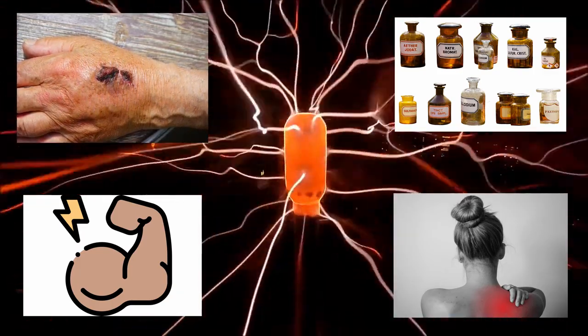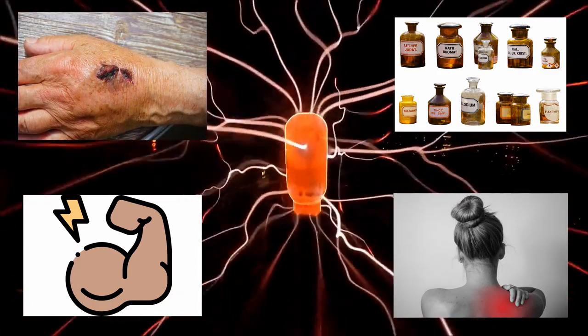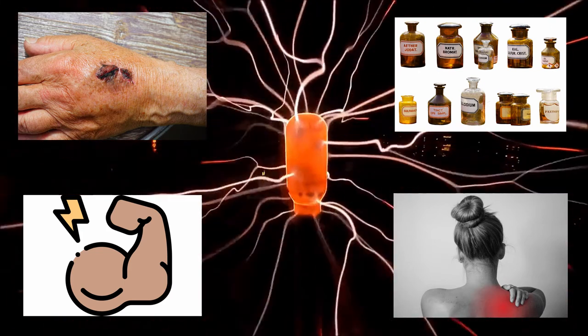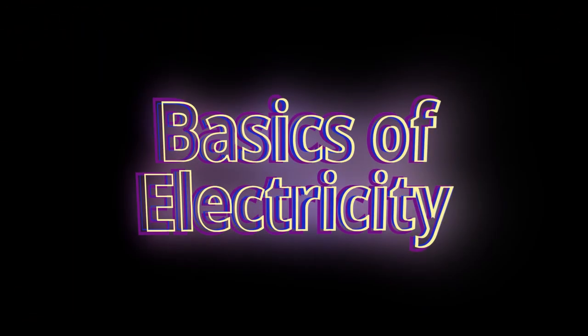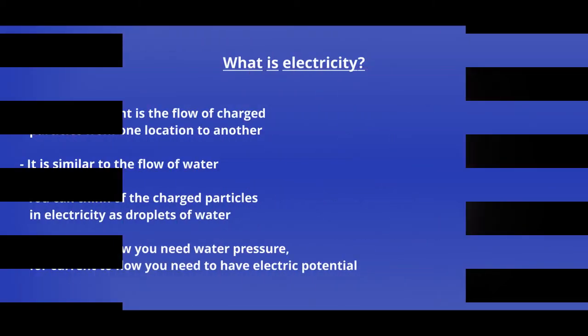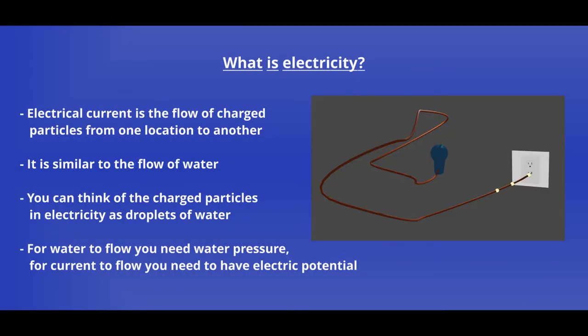So in this video, we want to discuss the basics of electricity and how it affects human tissue. Electricity is the flow of electric particles from one location to another. When trying to get a better understanding, it's helpful to compare the flow of electricity to the flow of water.